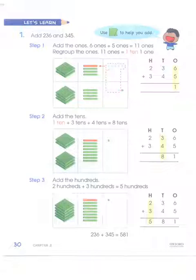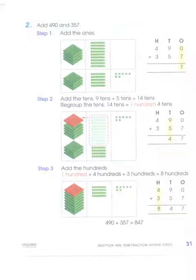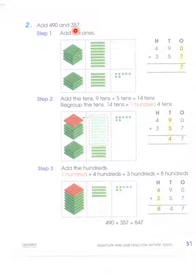Now add 490 and 357. Here we have 4 hundreds, 9 tens and 0 ones, plus 3 hundreds, 5 tens and 7 ones.